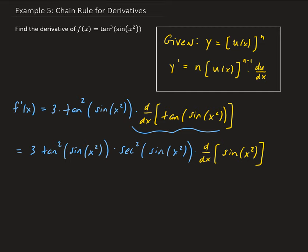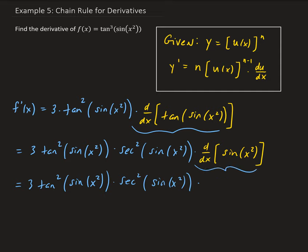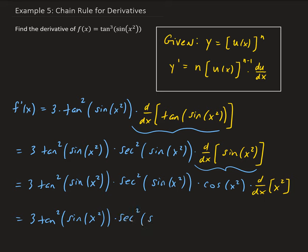Now we continue and take the derivative of sine x squared. So we have three times tangent squared of sine x squared, times secant squared of sine x squared. Taking the derivative of sine gives us cosine x squared, and then we still need to apply the chain rule to x squared.